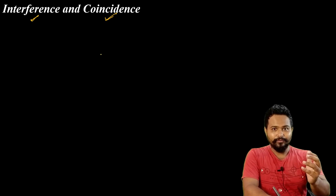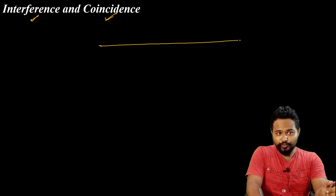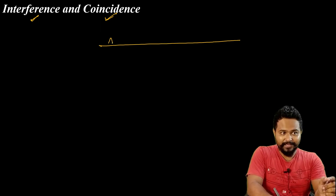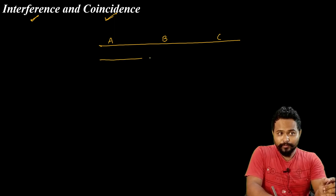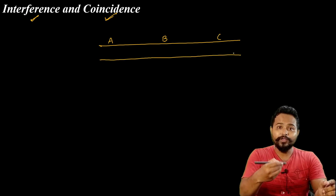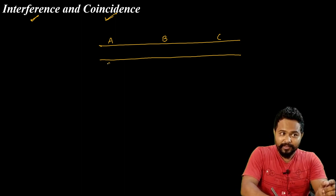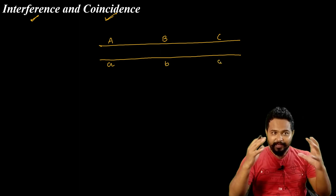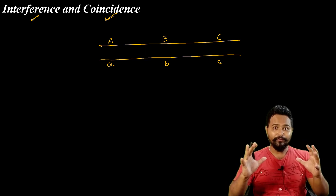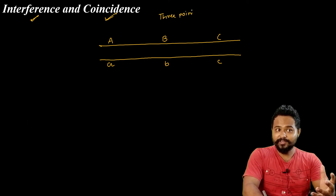In the last class we covered the three-point cross. We have a chromosome with genes A, B, and C on a homologous chromosome in a heterozygous condition — meaning the other chromosome carries a, b, c. This is the three-point cross situation. If we have three genes, it means a three-point cross.